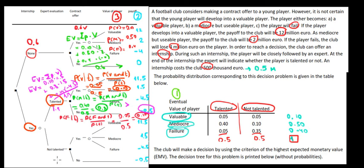Let's work on the last case in this video. What happens if the player is not talented after we test him in the internship? We're going to work with conditional probabilities for the not-talented scenario.